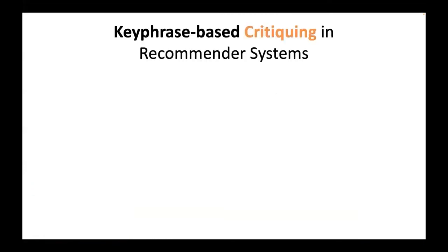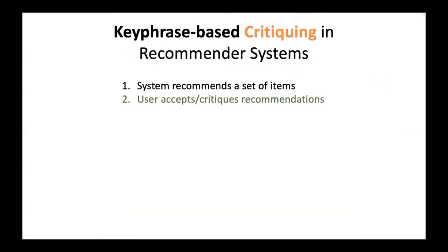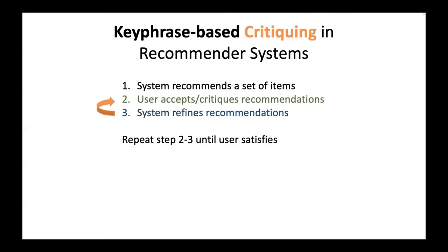This is an example of keyphrase-based critiquing in recommender systems, where the system recommends a set of items and the user chooses to accept or provide critiques based on these recommendations. The system would then refine the recommendations, and this process repeats until the user is satisfied with one of the recommendations.